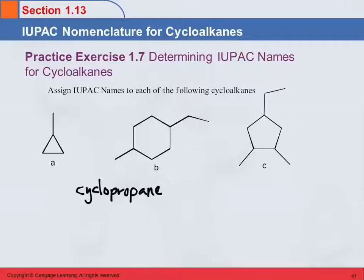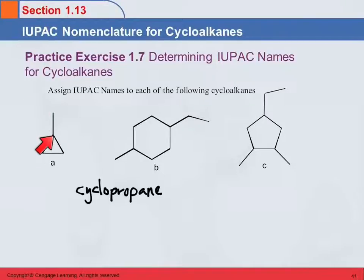If it was just a triangle, it would be cyclopropane. But this has something attached to it. What does this vertical line here represent? A methyl group — because here it's attached to this carbon, and at the other end of the line is another carbon, but just one carbon. So that's going to be methylcyclopropane.